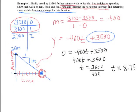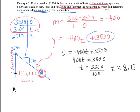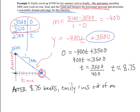And we should write this out as an answer, as an answer as a full sentence. After 8.75 weeks Emily runs out of money. So that's our interpretation of the horizontal intercept. It occurs at 8.75 weeks. A 0 dollar amount is left.